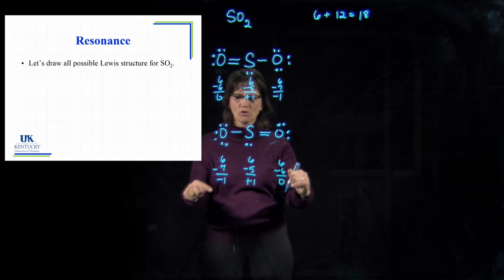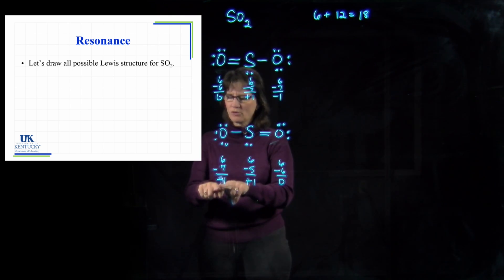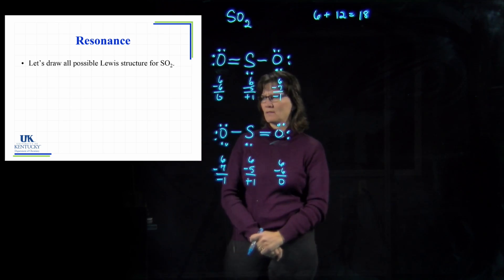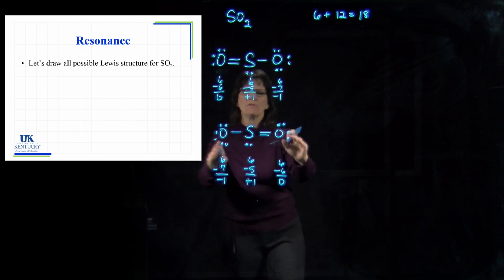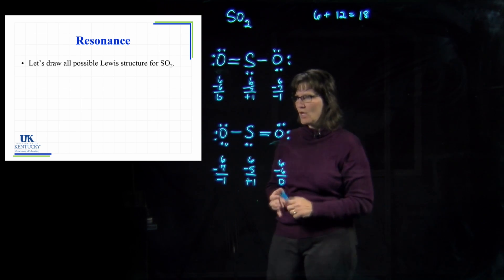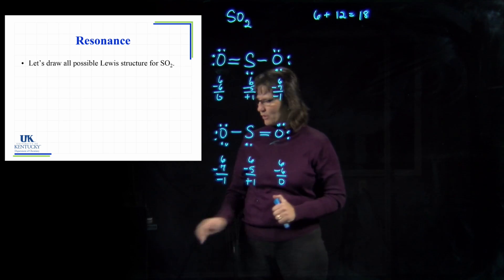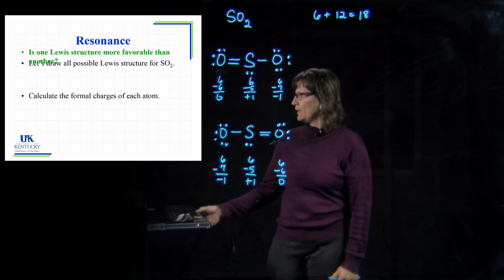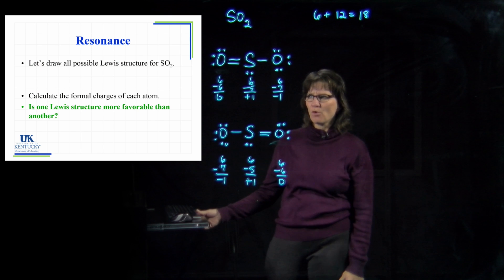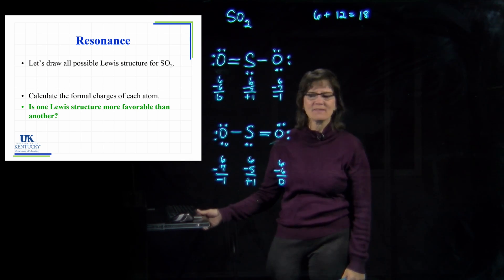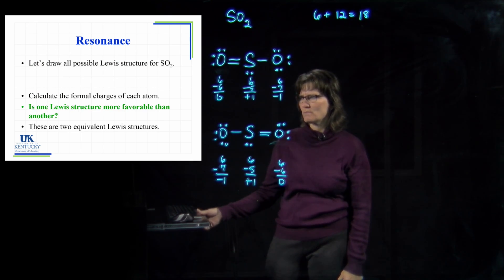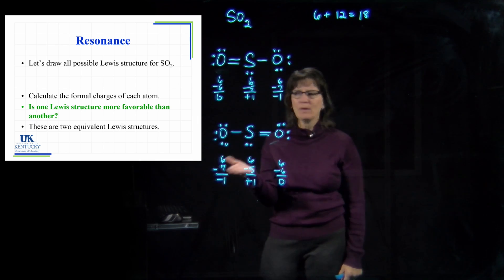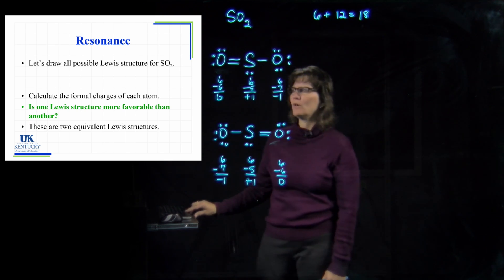So we have equivalent formal charges — the more electronegative atom, oxygen, has the negative formal charge in both structures. These are equivalent Lewis structures, so we can't say one is better than the other. They are equivalent.